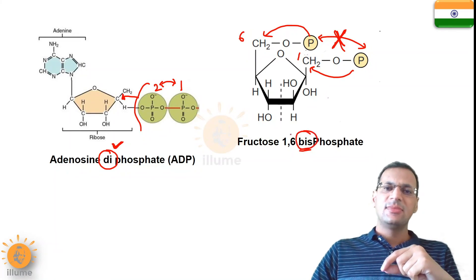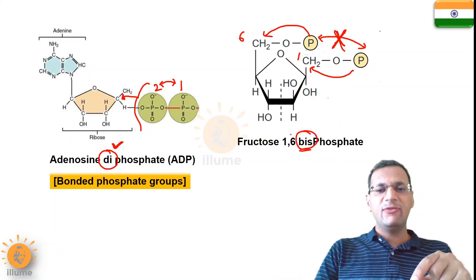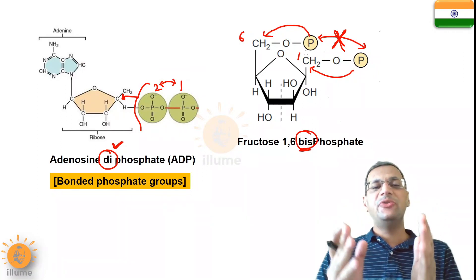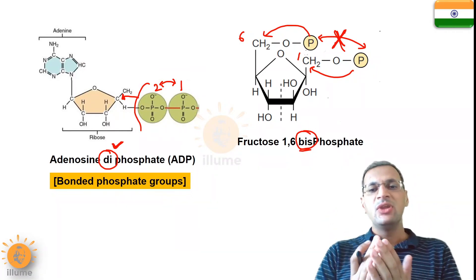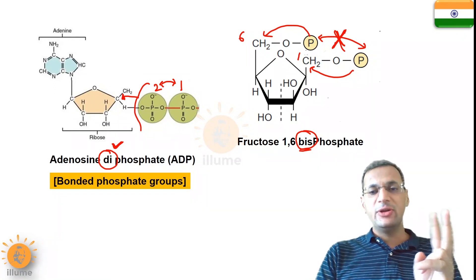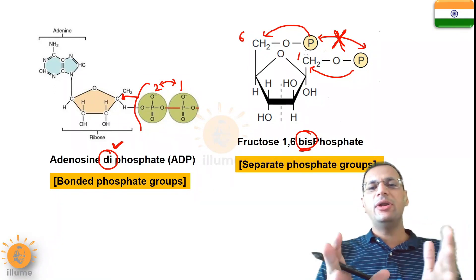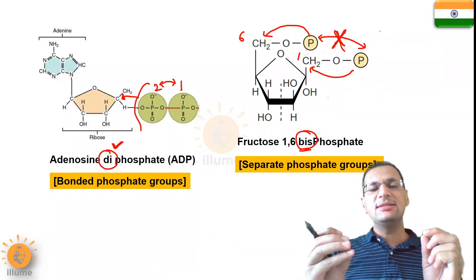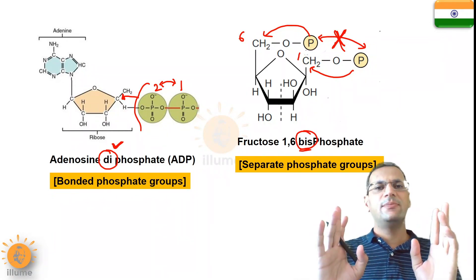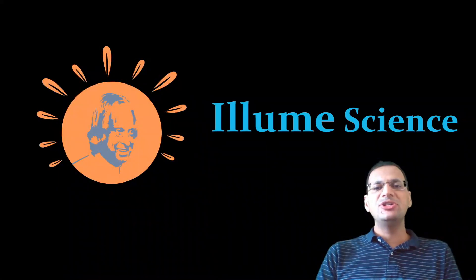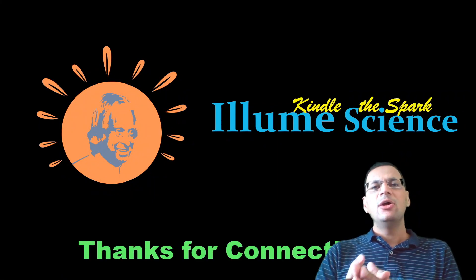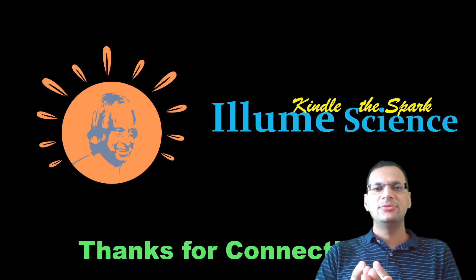So this is the difference: in diphosphates, the phosphate groups are bonded to each other, but in bisphosphates the two phosphate groups are not bonded to each other — they are separate. The similarity is that in both types of molecules, two phosphate groups are present. Thanks for watching, stay connected for more interesting videos!